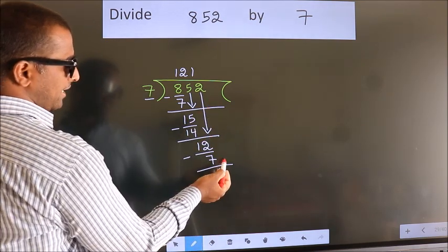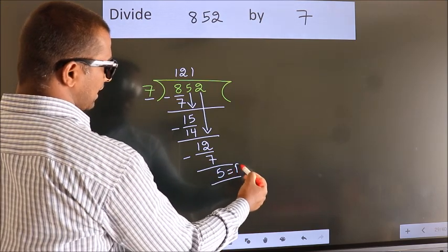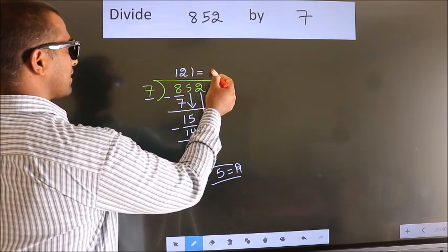No more numbers to bring it down. So, we stop here. This is our remainder. This is our quotient.